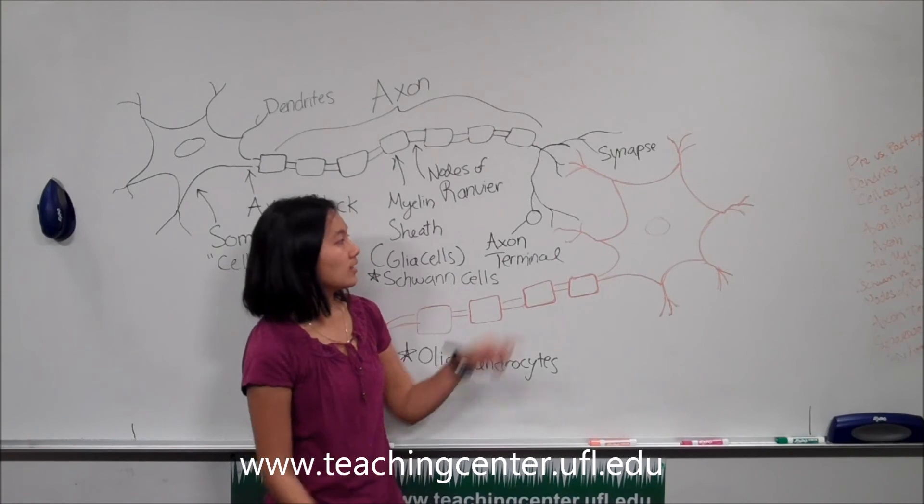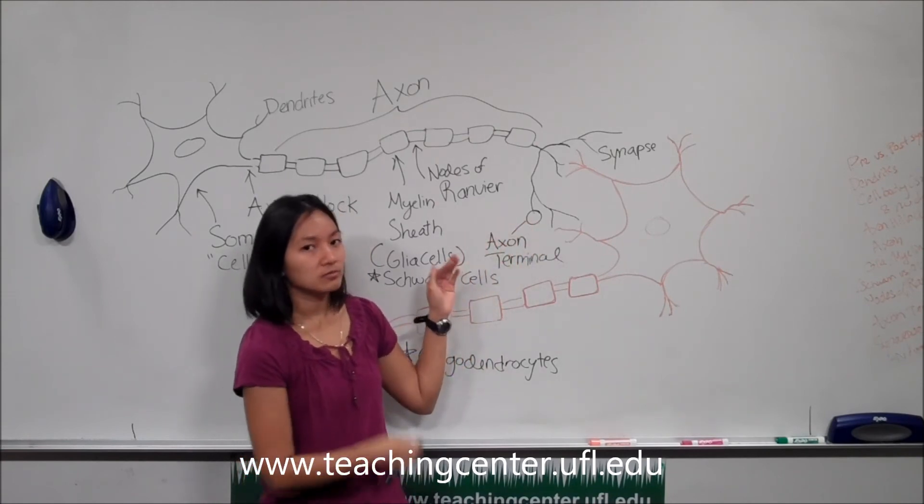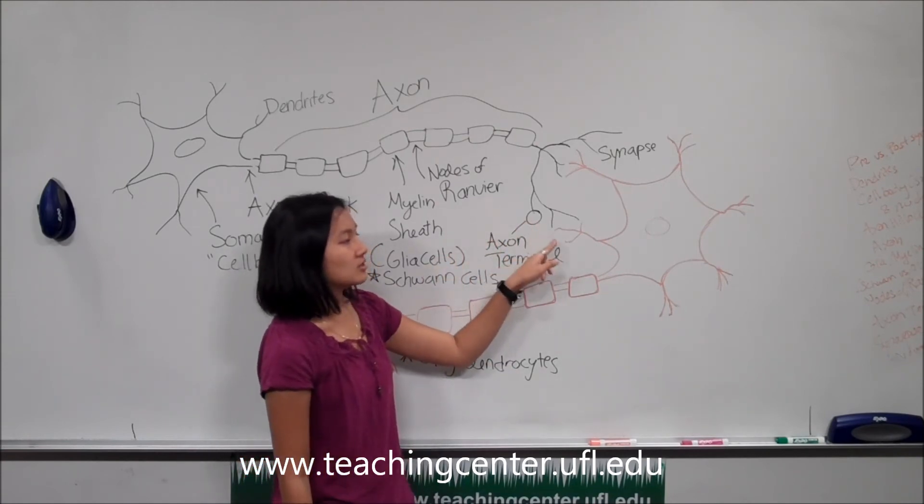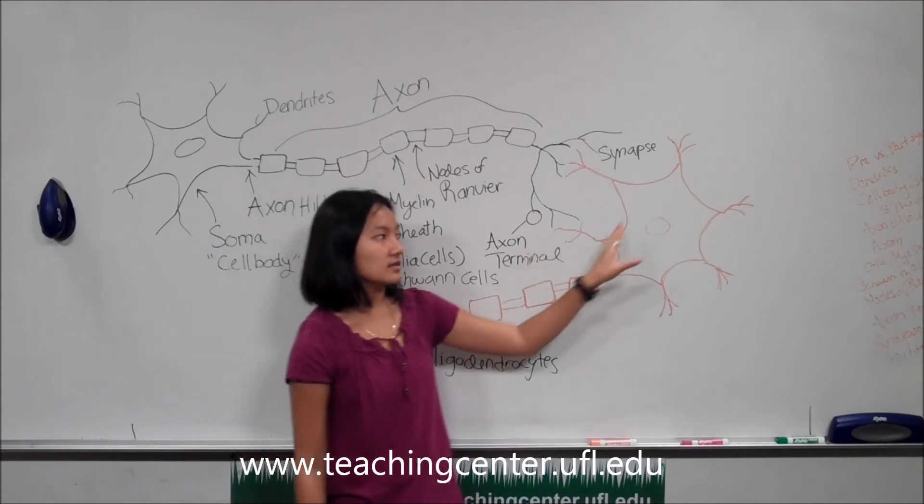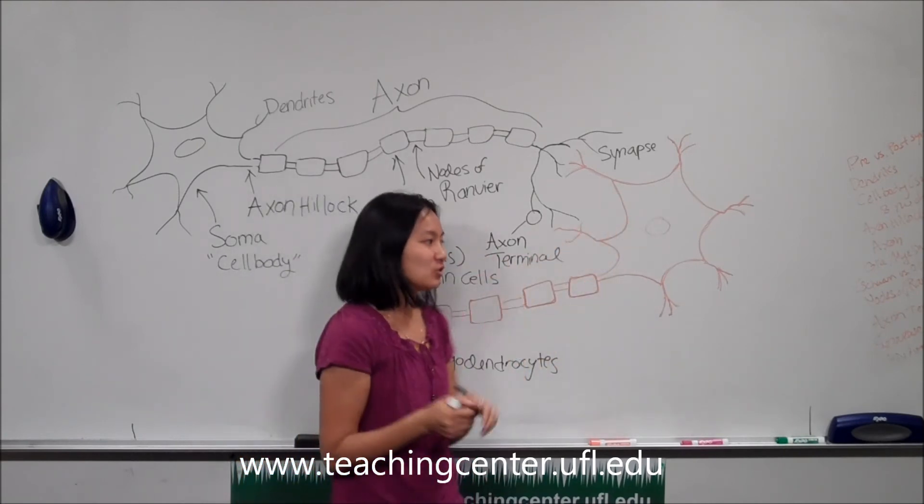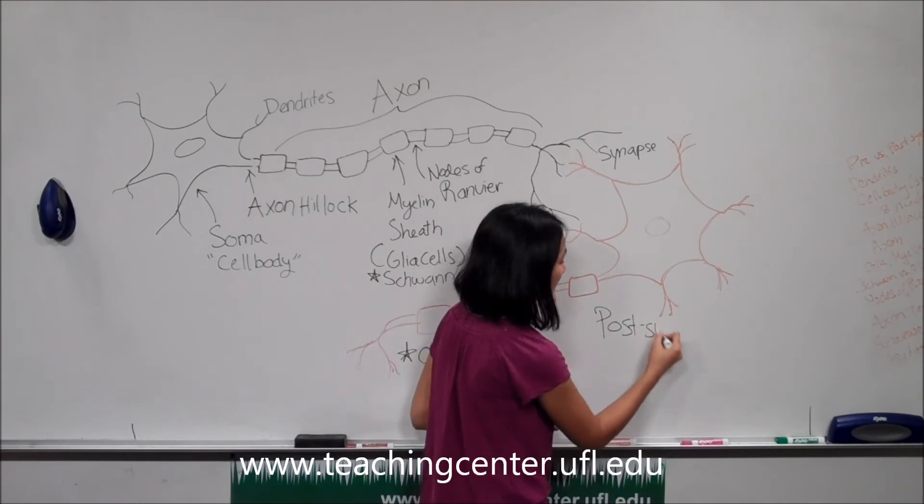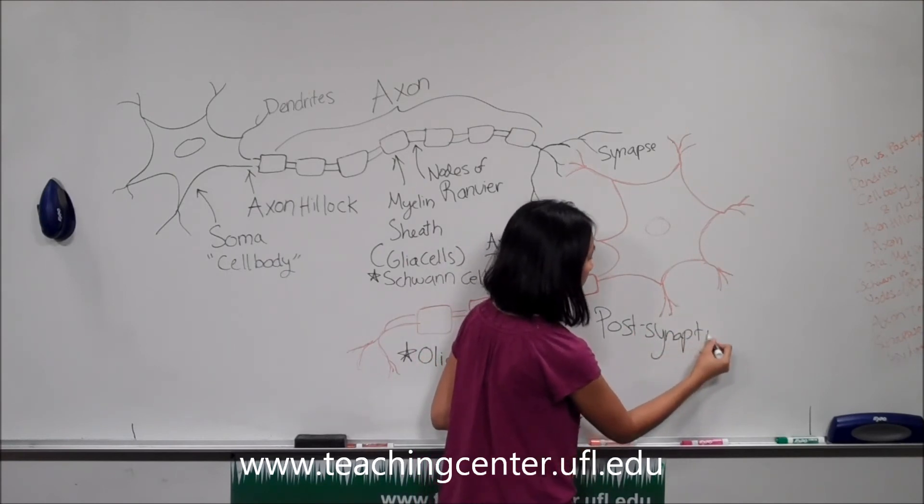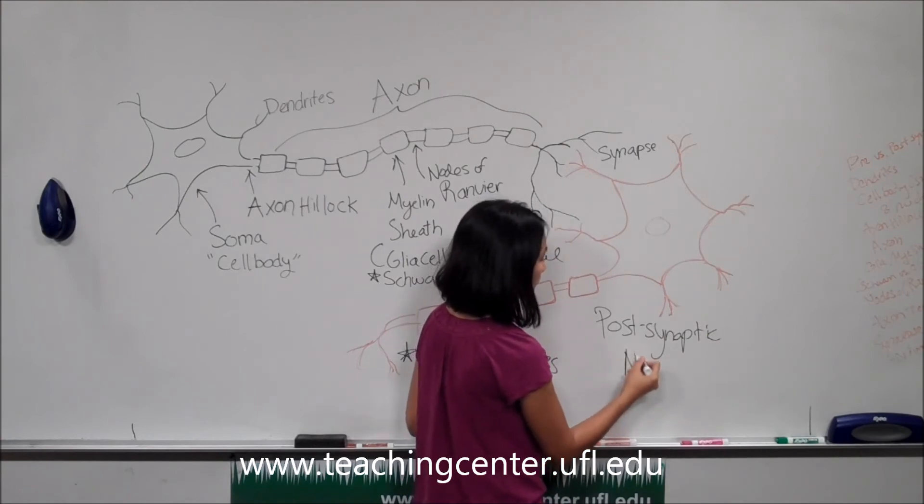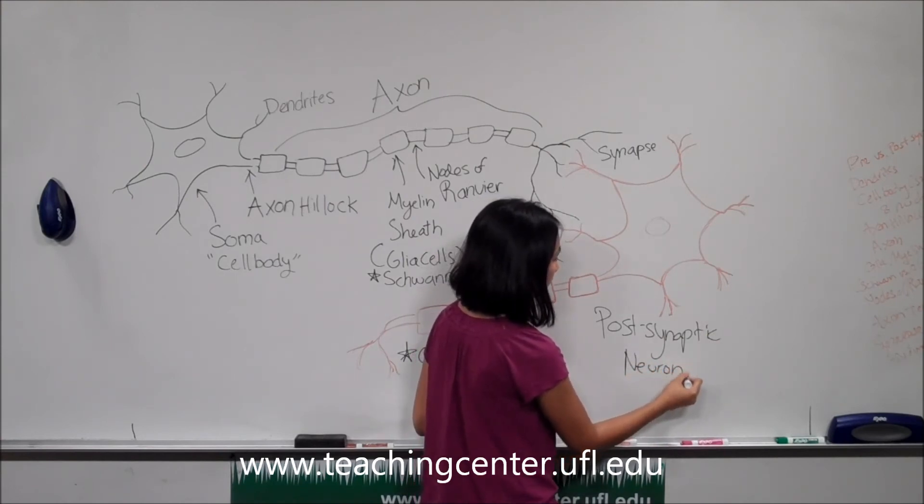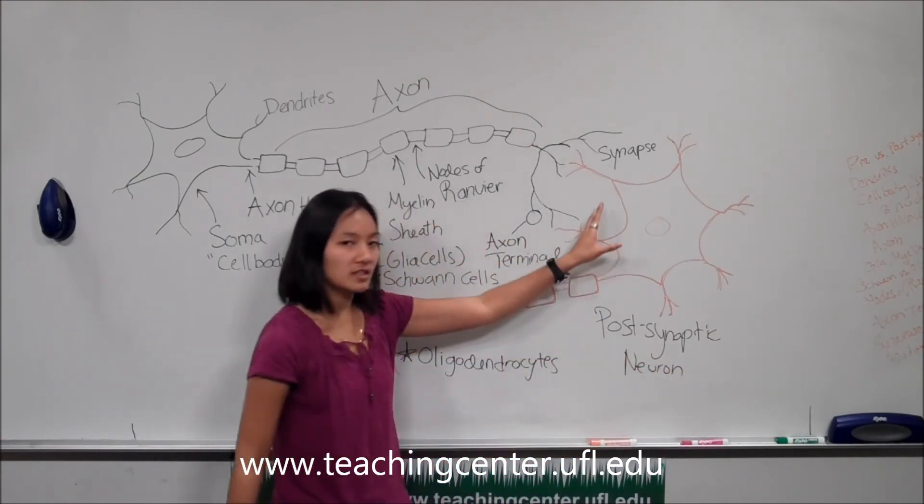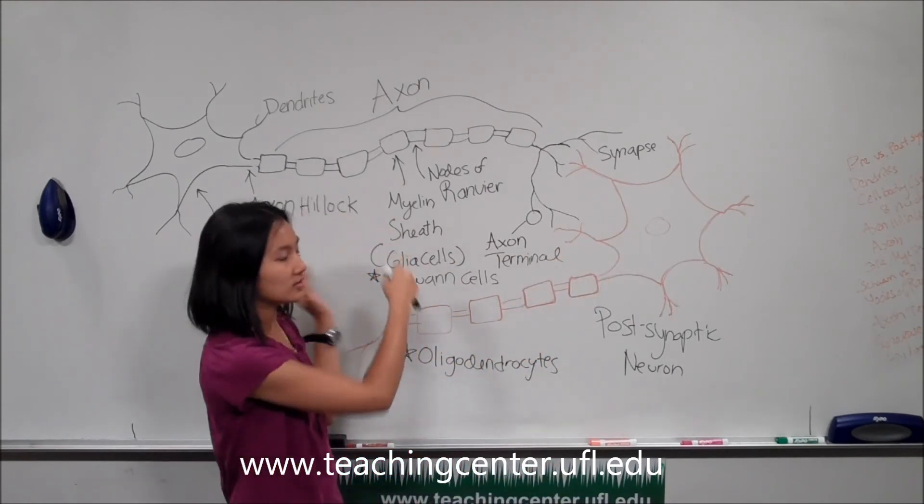Okay, so the axon terminal releases neurotransmitters and it's received by the dendrites of this postsynaptic neuron, to once again do the same thing that this neuron did.